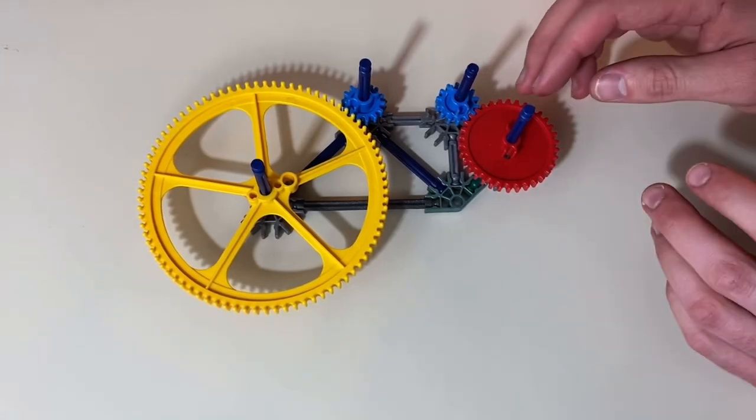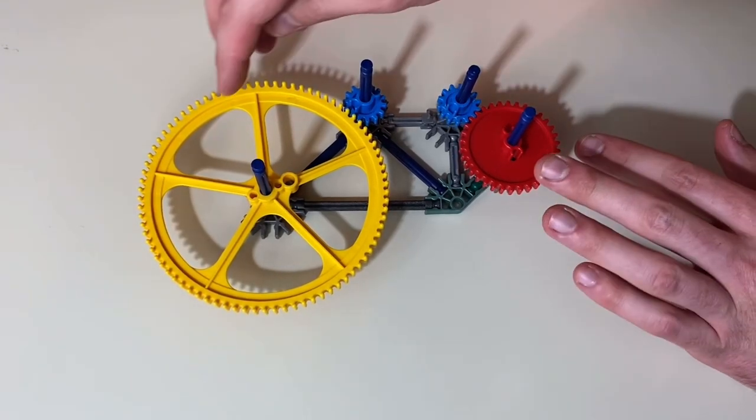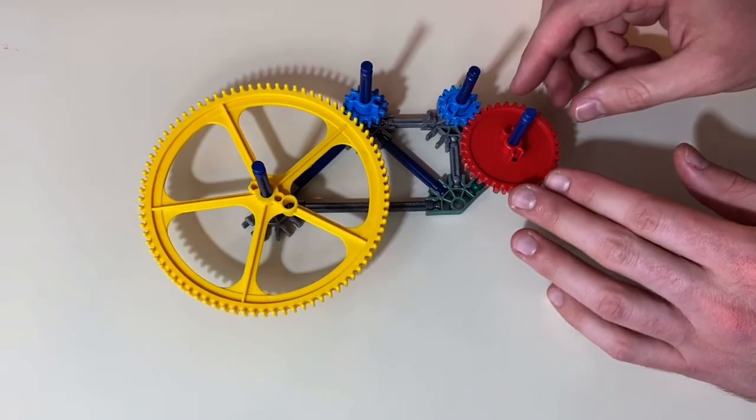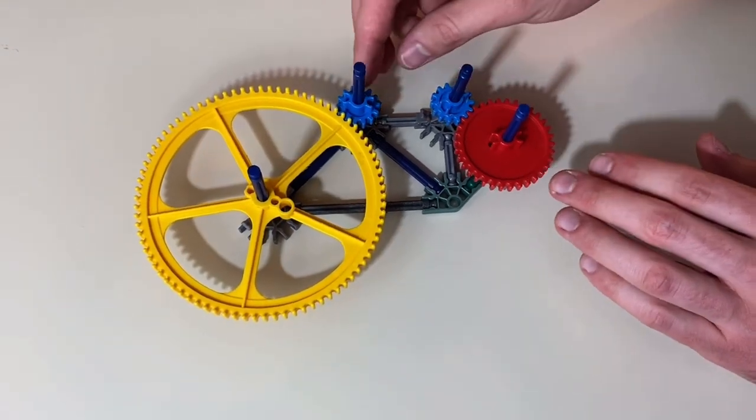These are the standard K'nex gear parts. You have a large yellow gear, a medium-sized red gear, and a small blue gear.